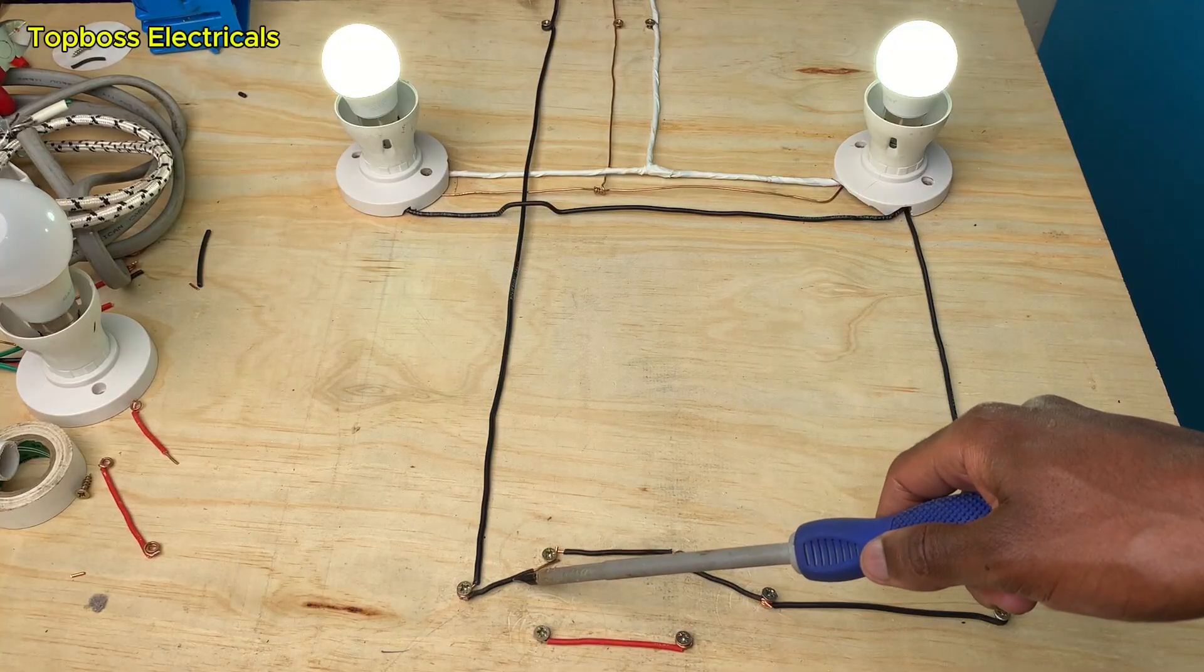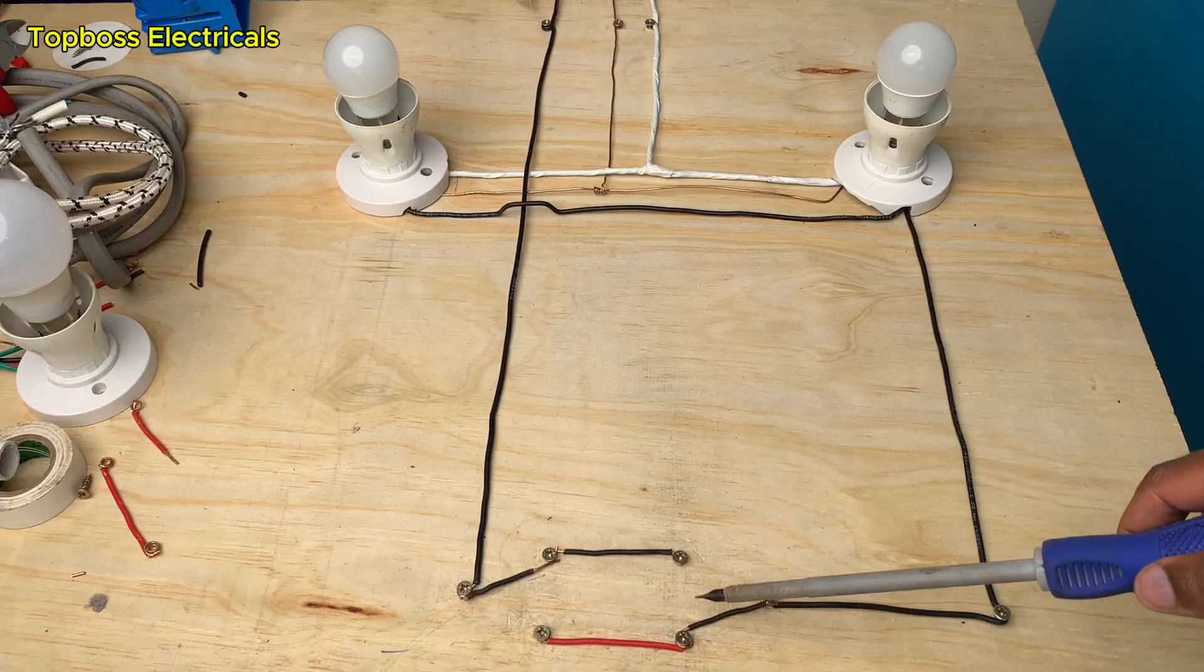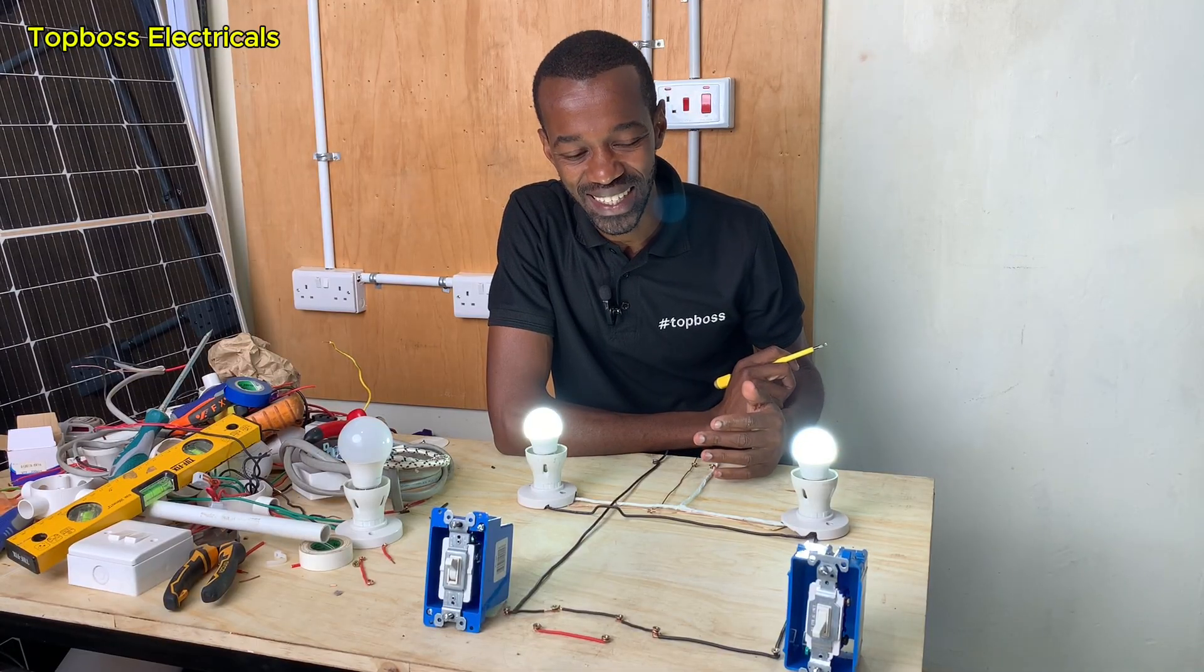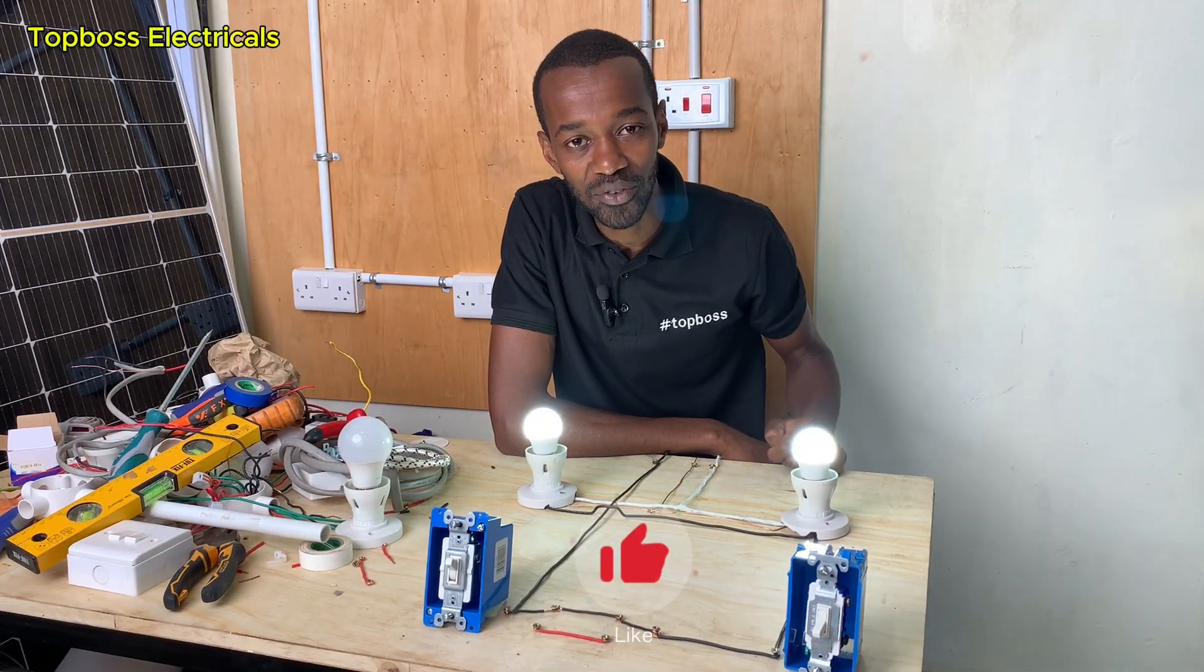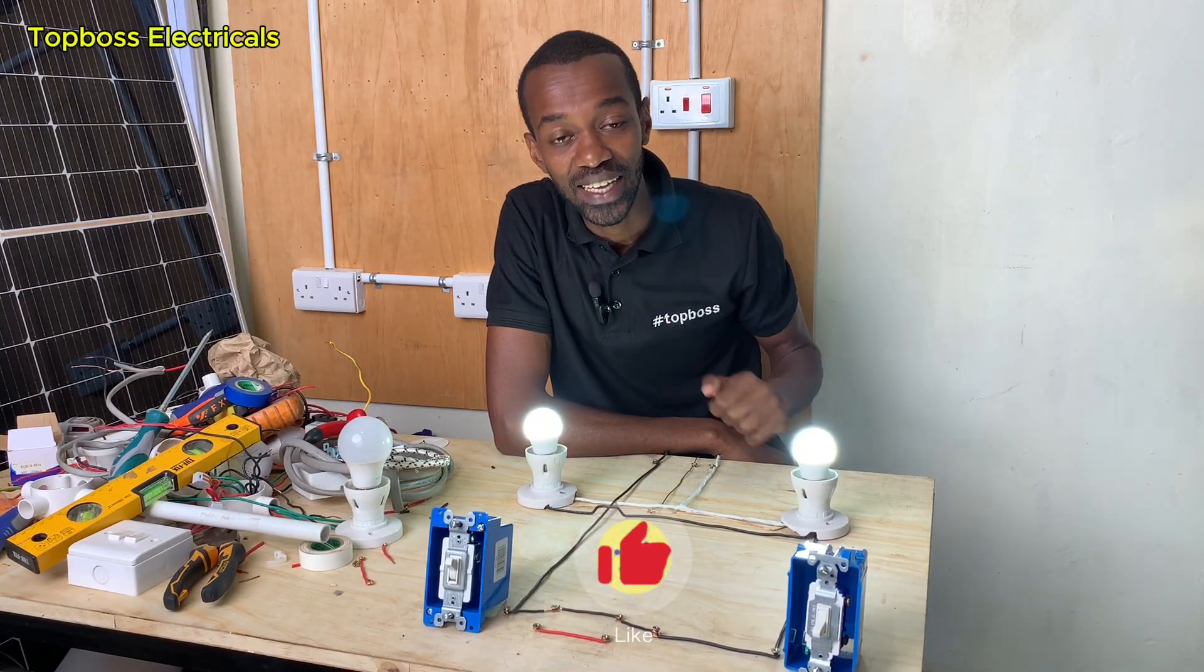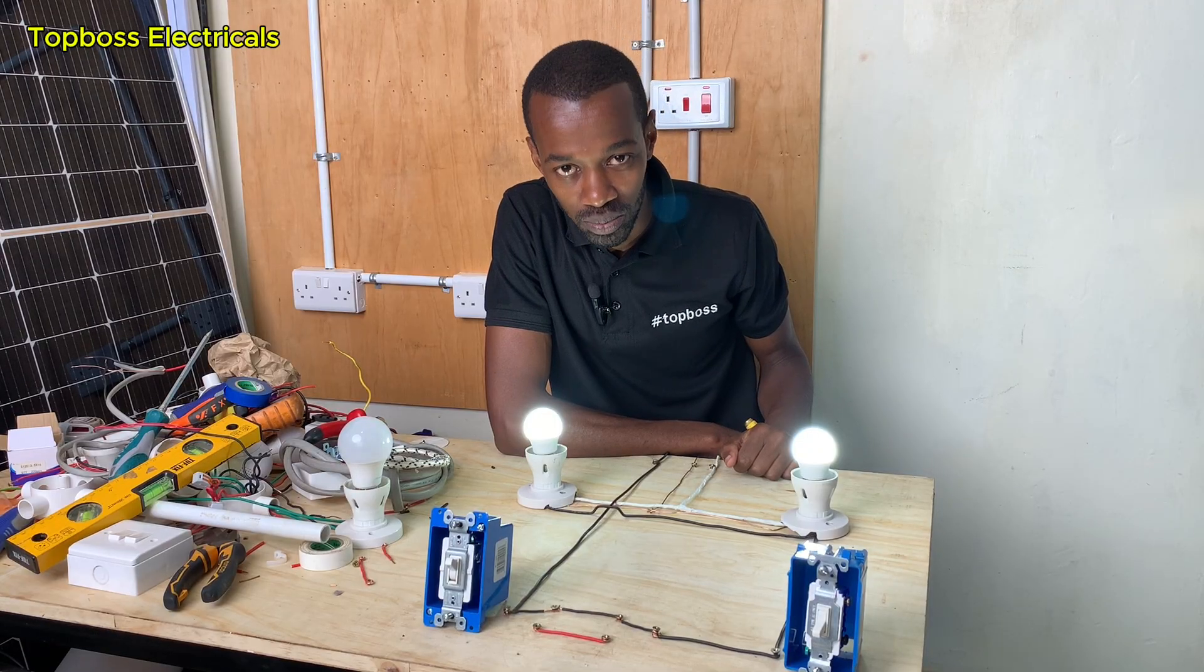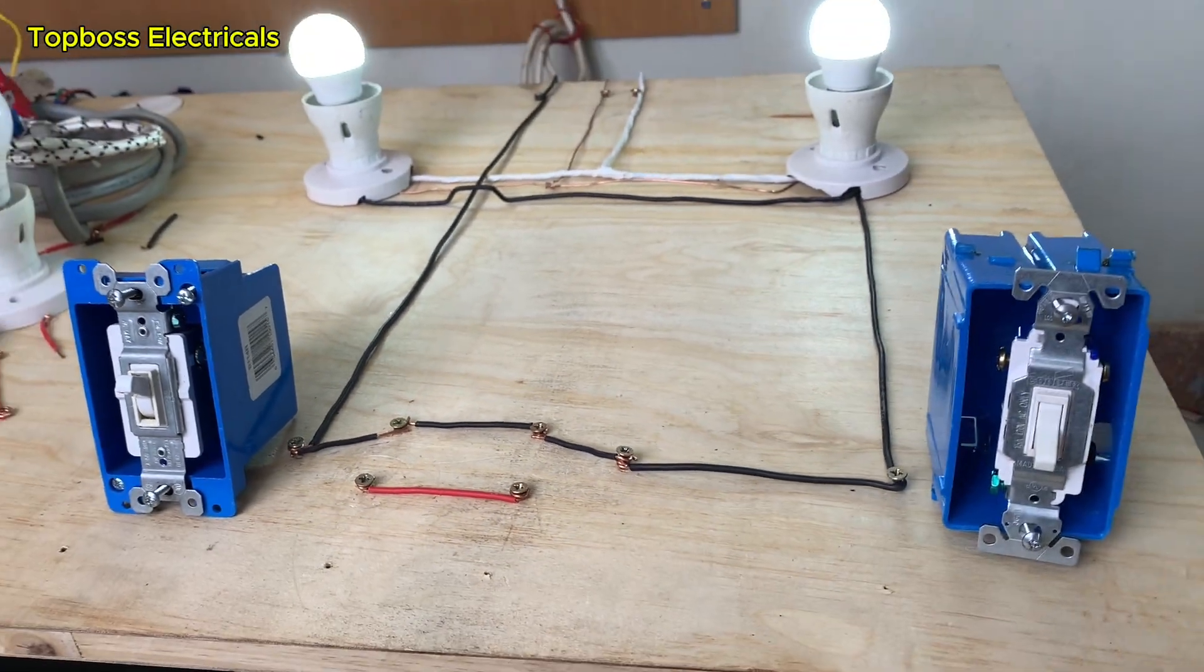This is the best, simplest video on the internet today concerning a three-way switch system. You will learn a lot, especially how it operates internally. With these two switching points, you can activate a light in either a staircase, a corridor, or a room where you enter through one door and exit on another.